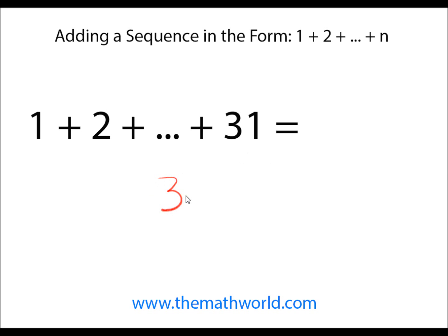We'll take 31, multiply it by the next highest number which is 32, and divide this entire thing by 2. We'll reduce this. 32 divided by 2 gives us 16 and 1.